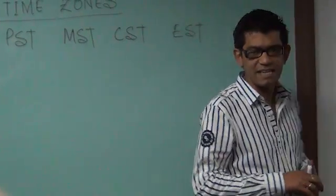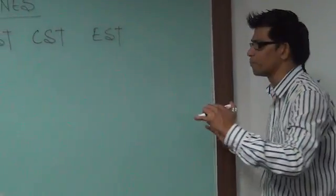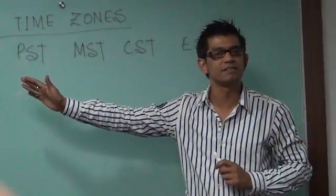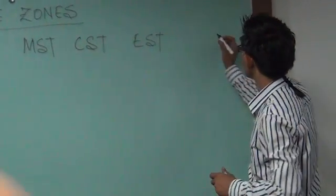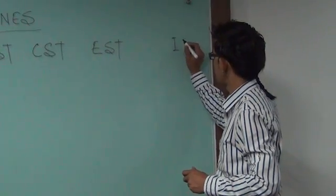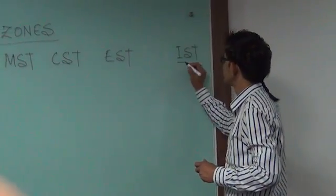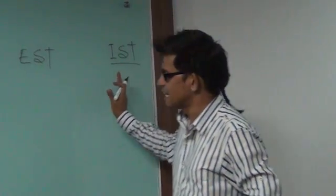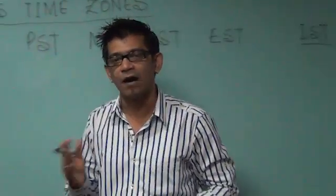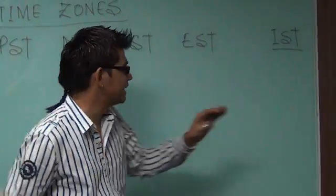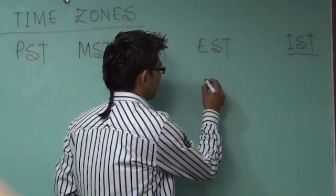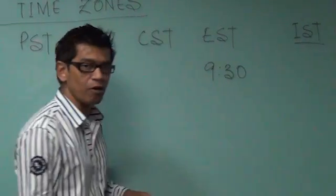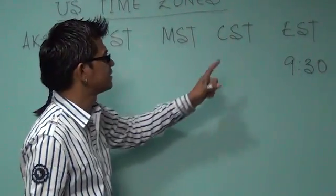Today we would like to see what the difference is between IST — Indian Standard Time — and the American standard times. The difference between IST and EST is nine and a half hours. IST is ahead of EST by nine and a half hours.